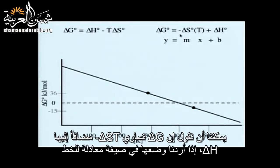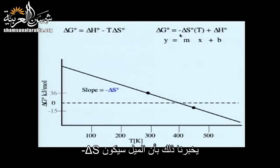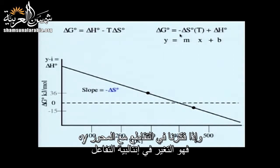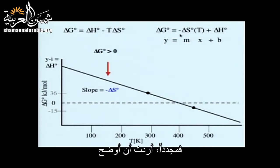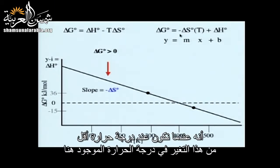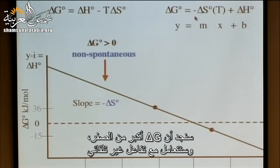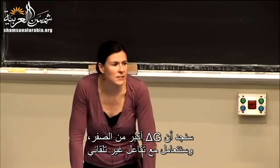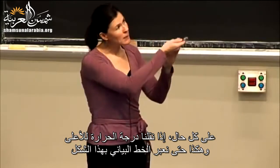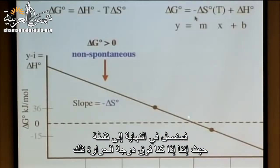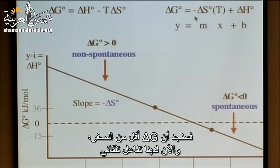We can graph this: at room temperature (~298 K), delta G was positive at 36 kJ/mol; at baking temperature, delta G was negative at −15 kJ/mol. Drawing a straight line through these points, there is a threshold temperature where anything below gives positive delta G (non-spontaneous) and anything above gives negative delta G (spontaneous). We can write delta G equals negative delta S times T plus delta H to identify the slope and y-intercept.